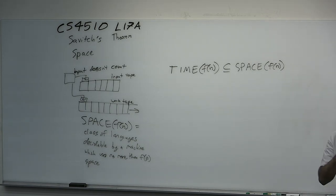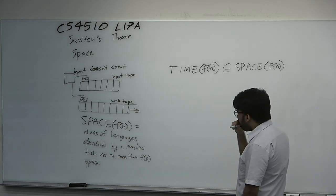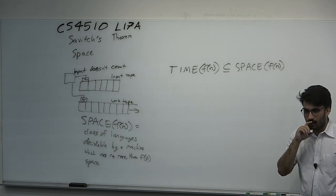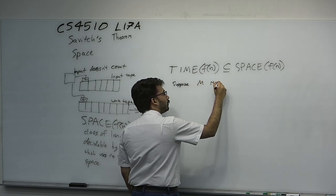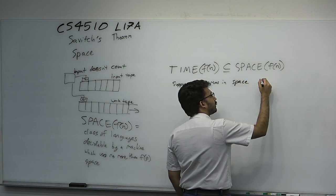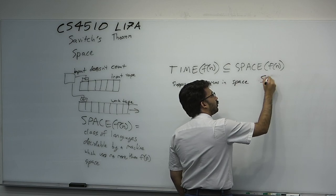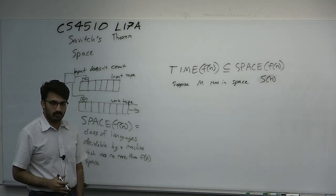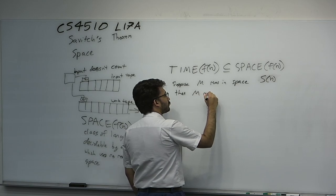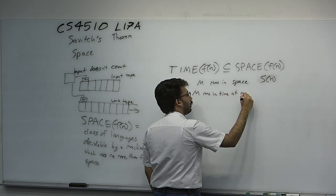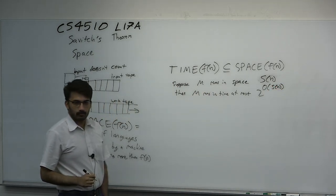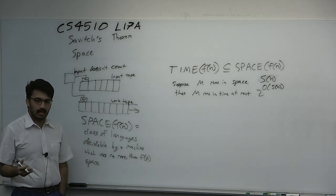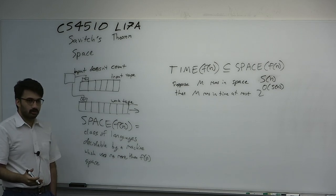We can also determine a time bound from a space bound. Suppose M runs in space s(n). Then M runs in time at most 2^(O(s(n))). A computation is a sequence of configurations c₀ to c₁ and so on. If M runs in T steps, there are T+1 configurations. But if the machine has space bound s(n), we know the size of a configuration is O(s(n)), since a configuration encodes the tape contents, head position, and current state.